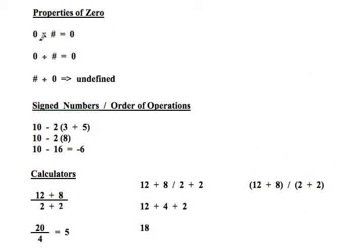Now, properties of 0. 0 times any number is 0. 0 divided by a number is 0. But you can't divide by 0. That's undefined.